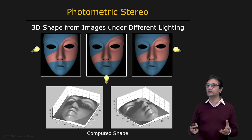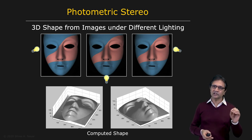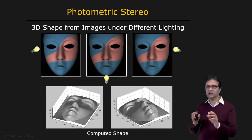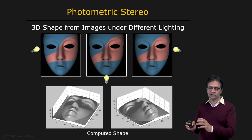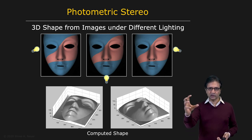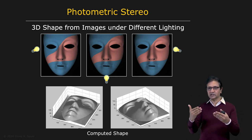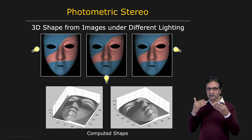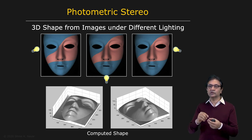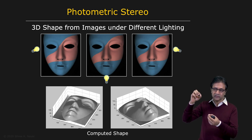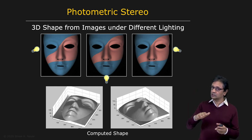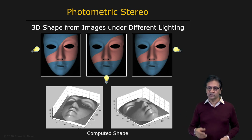Next, we'll take a look at photometric stereo — the first method we'll describe for recovering 3D shape information from images of an object taken under different lighting conditions. You have a three-dimensional object, you're looking at it from the same direction, but you light it from different known directions. The change in brightness at each point across the stack of images allows you to compute the surface normal at each point on the surface. Then you can integrate these surface normals to get the three-dimensional shape.